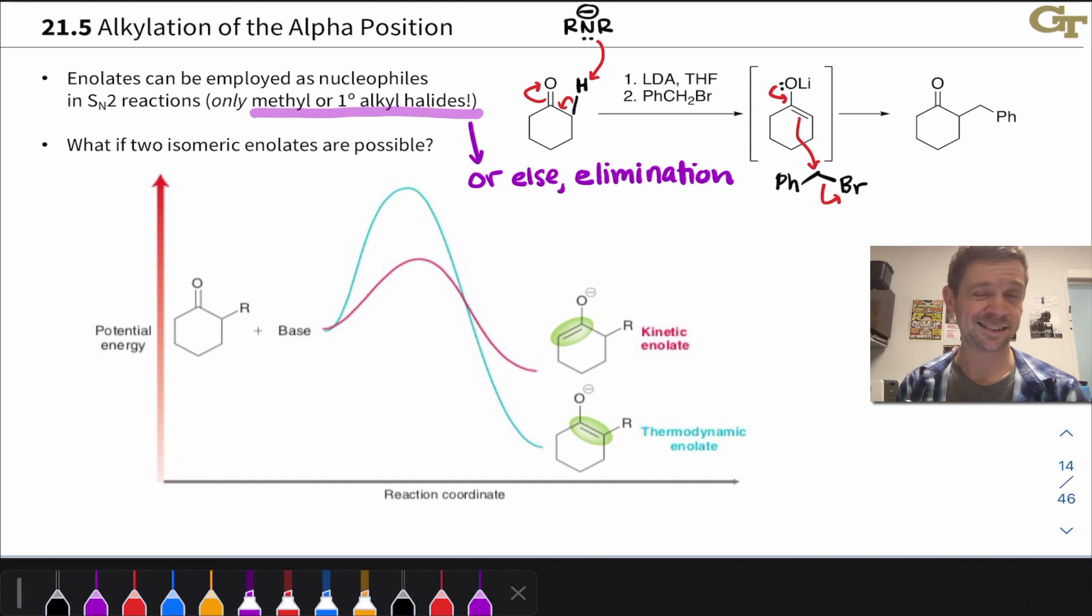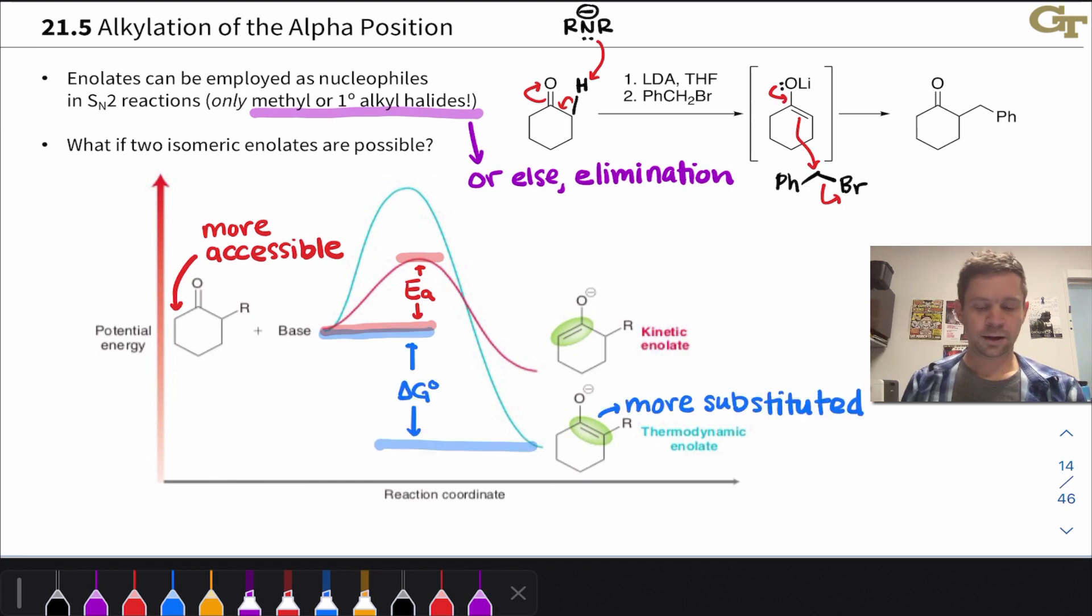But in this case, it's actually not the one that's formed more quickly. The less thermodynamically stable enolate is formed more quickly because the less substituted alpha carbon is more accessible. There's less steric crowding around that alpha carbon, and so it forms more rapidly. And when a very strong base like LDA is used, deprotonation will occur selectively here, since once we get over that hump, over that deprotonating hump, there's no going back.